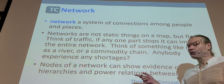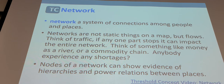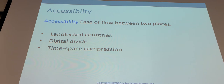Networks and their flows can also show hierarchies of power. We talk a lot about power relationships in this class, and networks are a final part of that. We're looking at networks in places that are less connected — we talk about accessibility. Some specific examples: landlocked countries, the digital divide, and time-space compression.